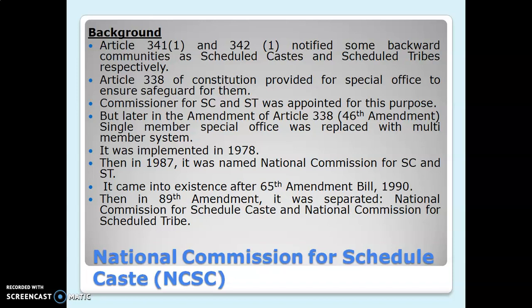The second commission is the National Commission for Scheduled Castes. Articles 341-1 and 342-1 of the Constitution notified certain backward communities as Scheduled Caste and Scheduled Tribe, and certain advantages must be given to them to uplift their status. Article 338 provided for a special office to ensure safeguards for SC and ST, and a Commissioner for SC and ST was appointed to oversee that all protections and rights are fulfilled for those belonging to this category.